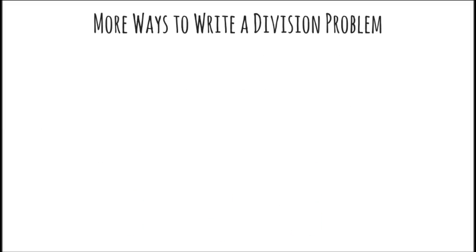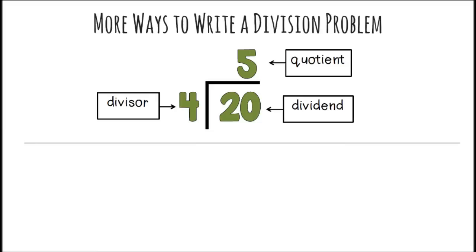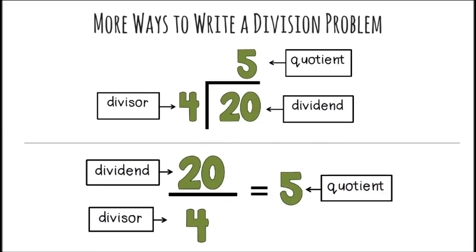More ways to write a division problem. 20 divided by 4 equals 5. The 20 is inside the house, which is the dividend. The 4 is outside the house, which is the divisor. And 5 is the quotient, which is on the roof of the house.